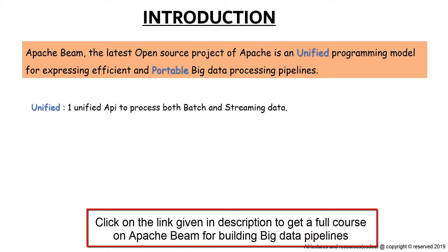If you notice the name itself — the word Beam was coined from the combination of two words: batch and stream. The community wants to change the way in which we see our data. Going forward in the future, they want the data to be seen as data only, and not divided into batches and streams. This is one strong point and the vision of Beam, and in fact the main reason why this project was started.